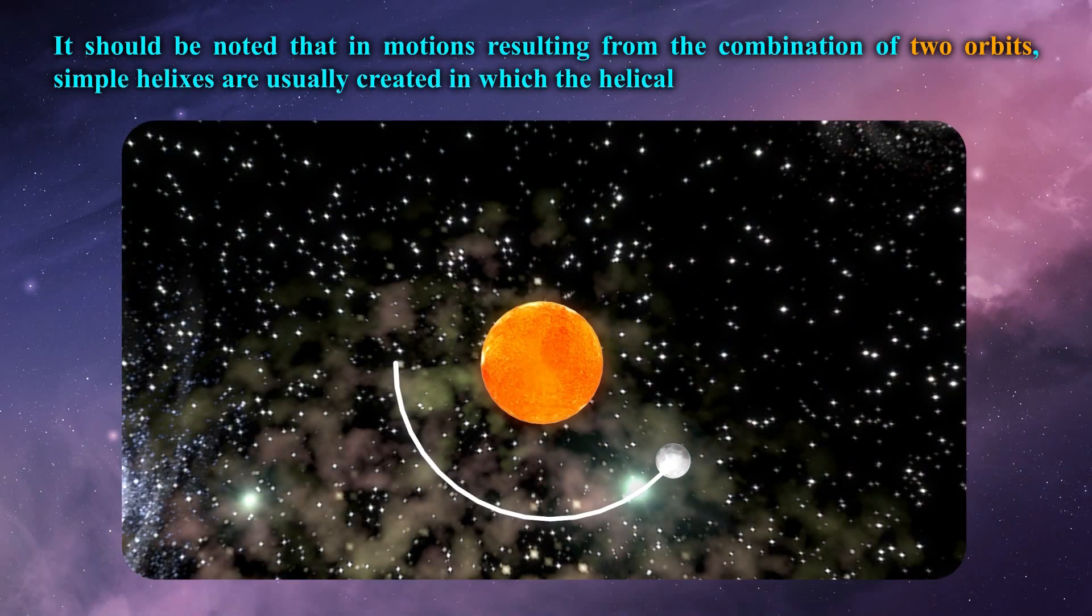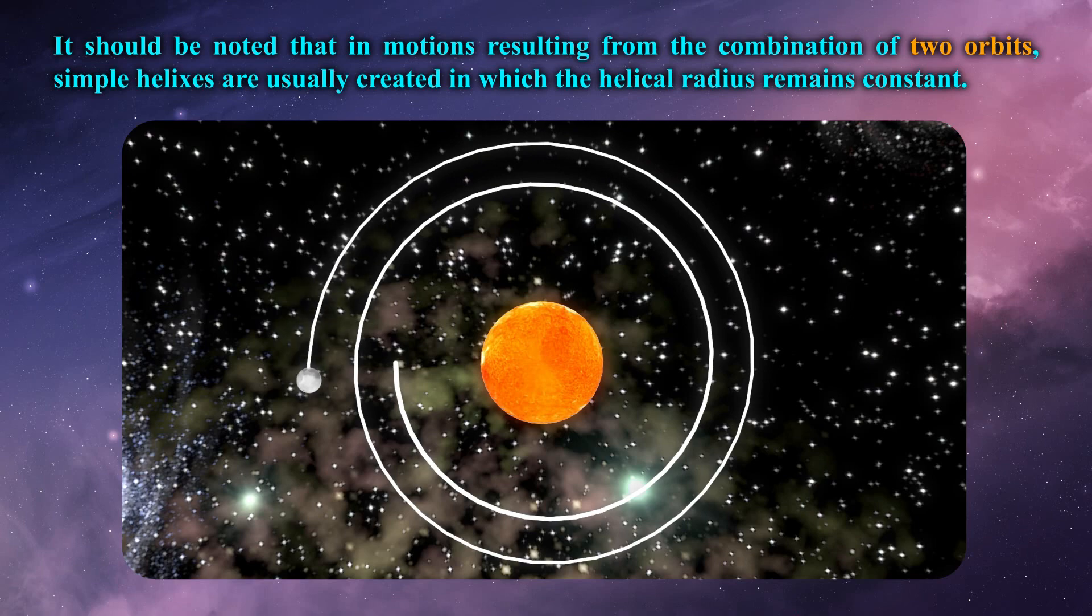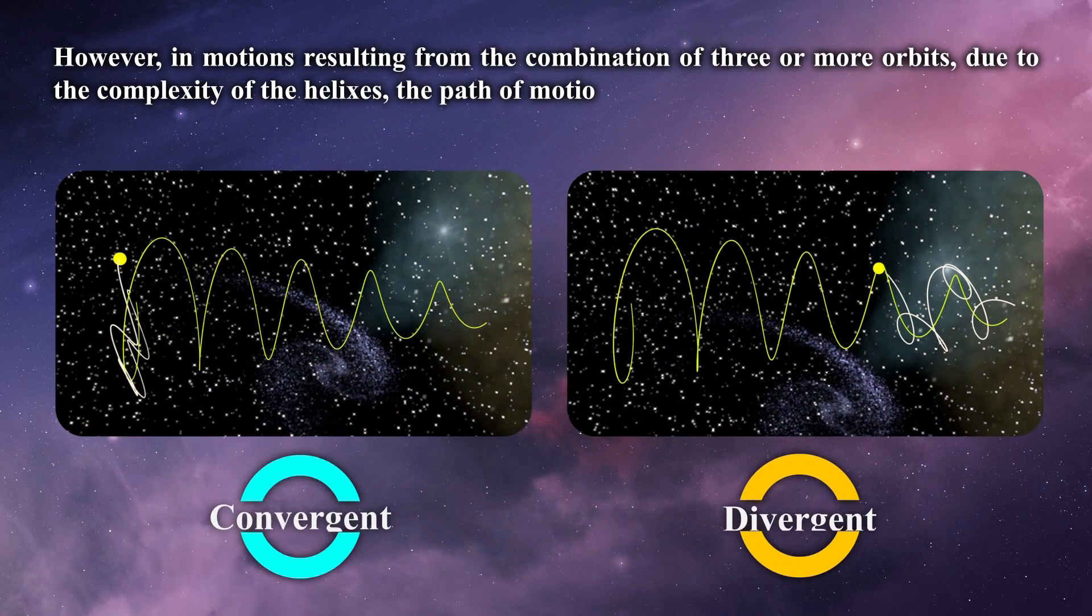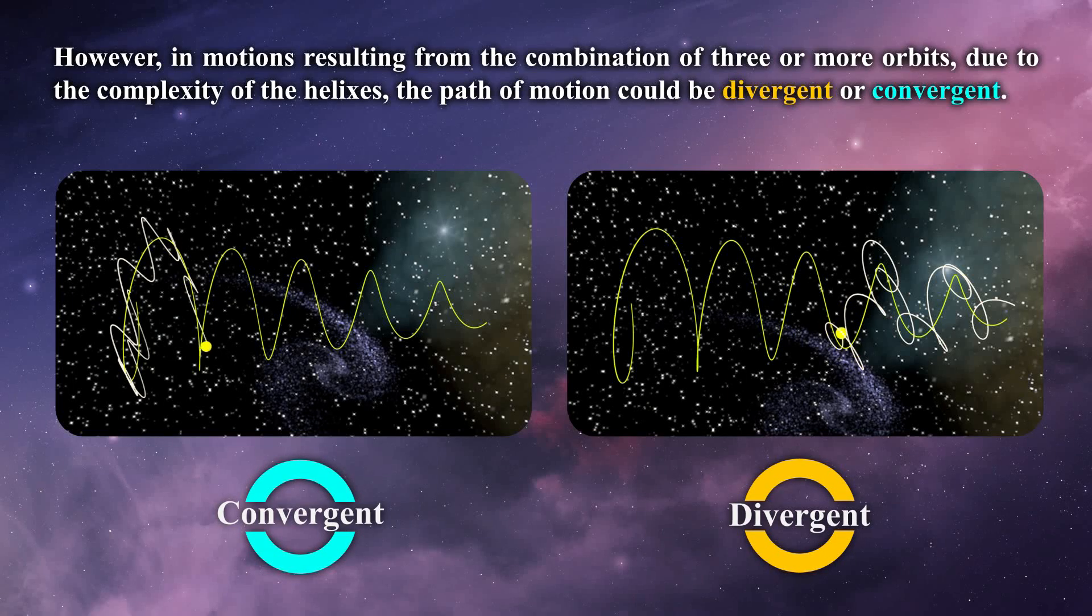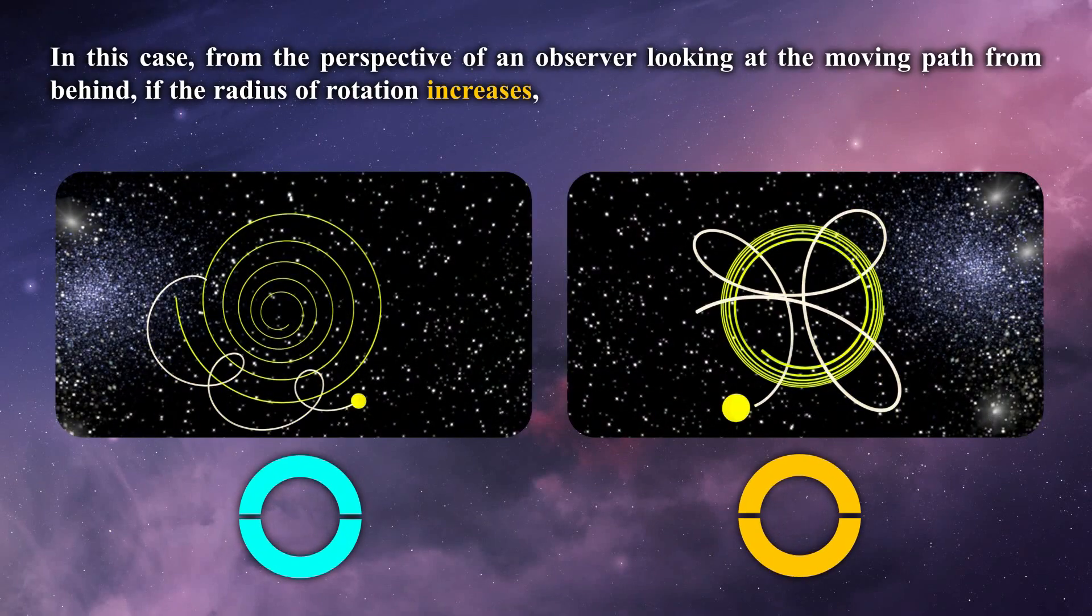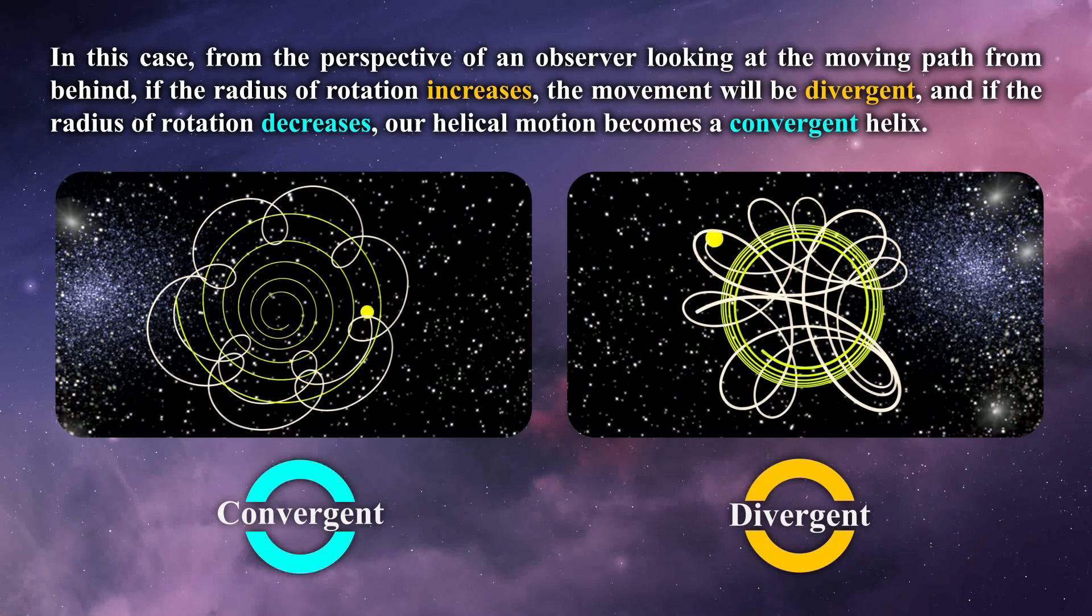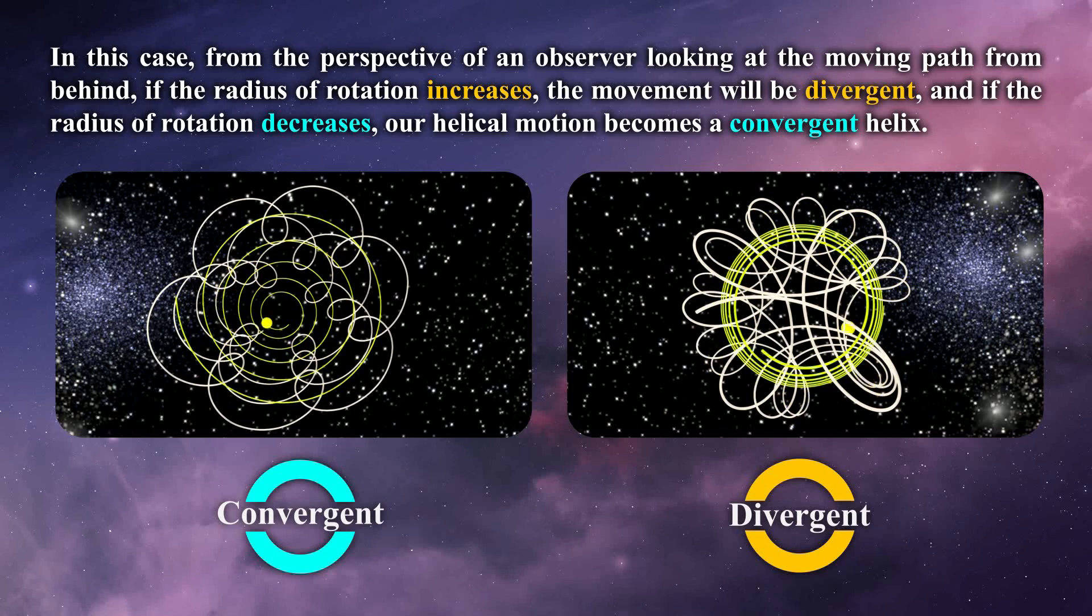It should be noted that in motions resulting from the combination of two orbits, simple helixes are usually created in which the helical radius remains constant. However, in motions resulting from the combination of three or more orbits, due to the complexity of the helixes, the passive motion could be divergent or convergent. In this case, from the perspective of an observer looking at the moving paths from behind, if the radius of rotation increases, the movement will be divergent, and if the radius of rotation decreases, our helical motion becomes a convergent helix.